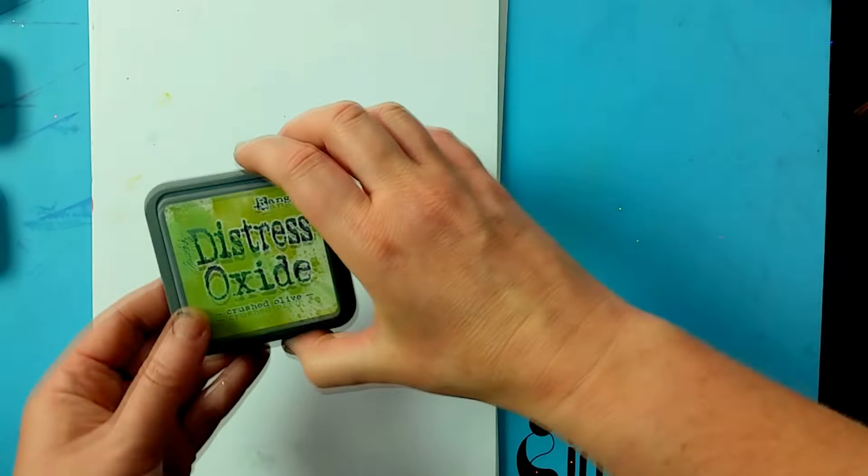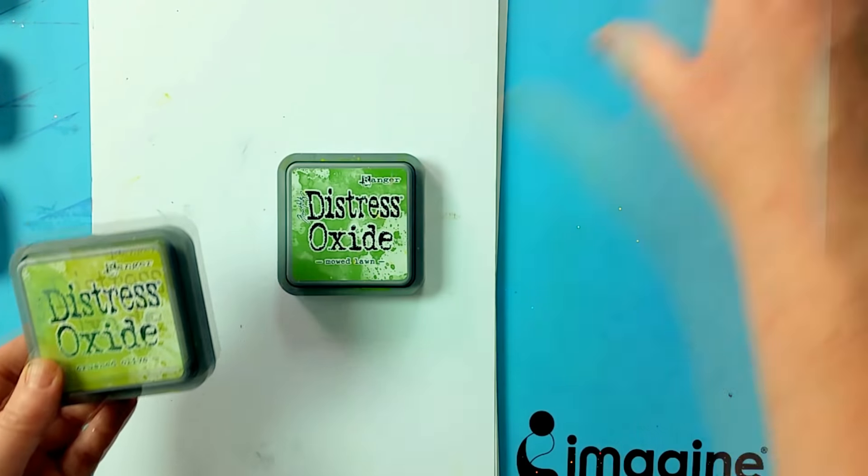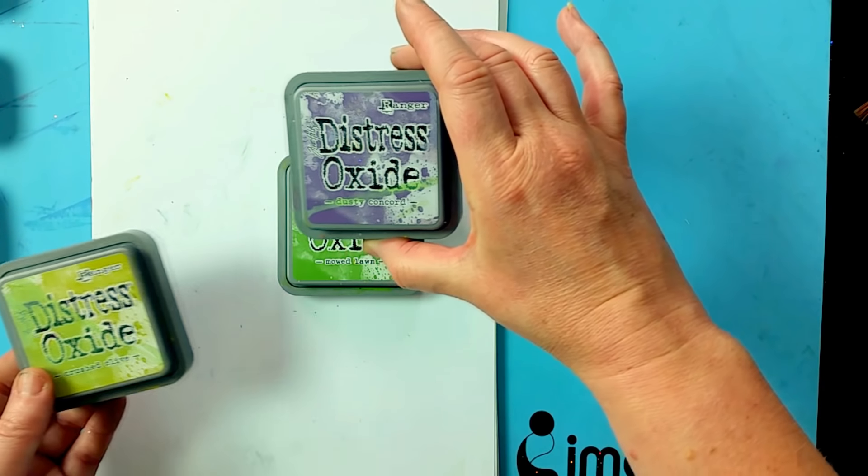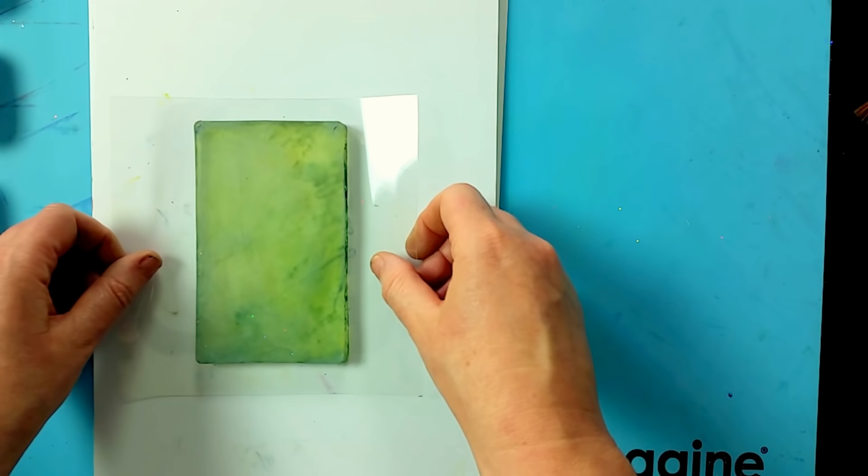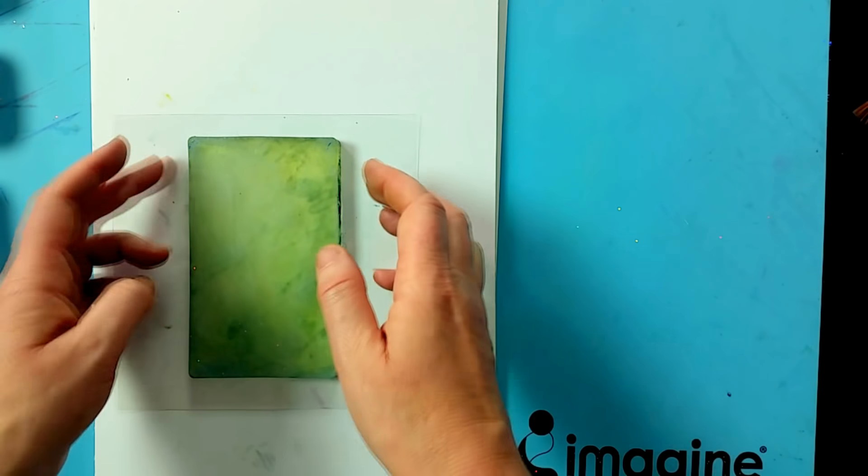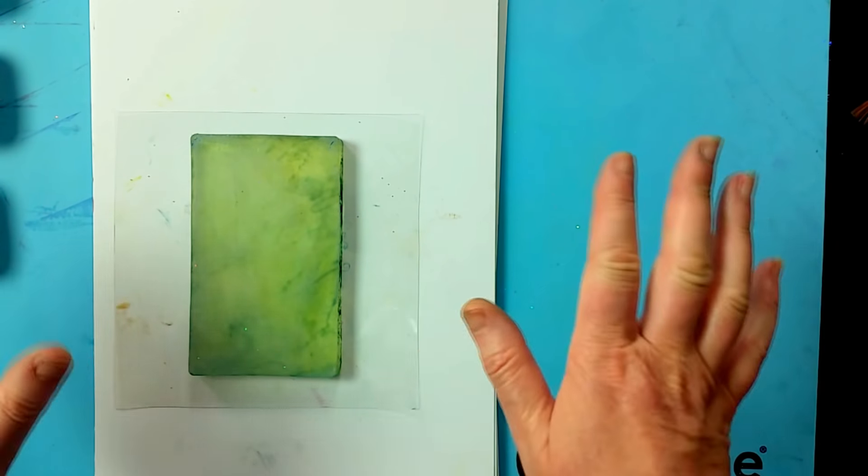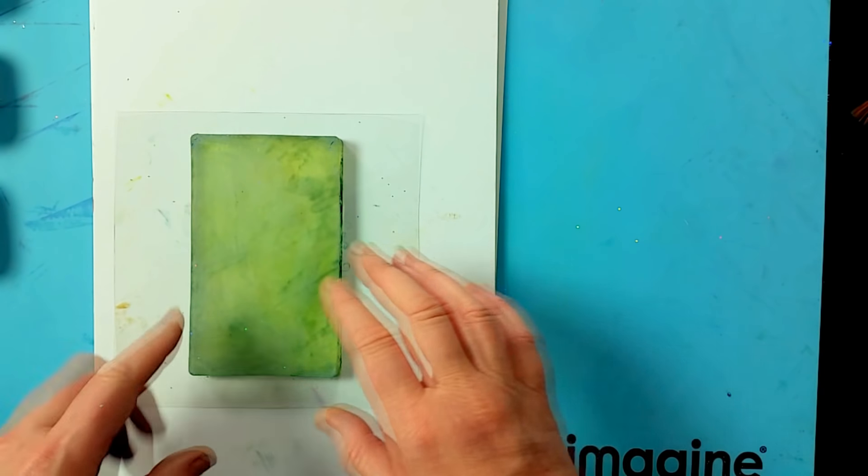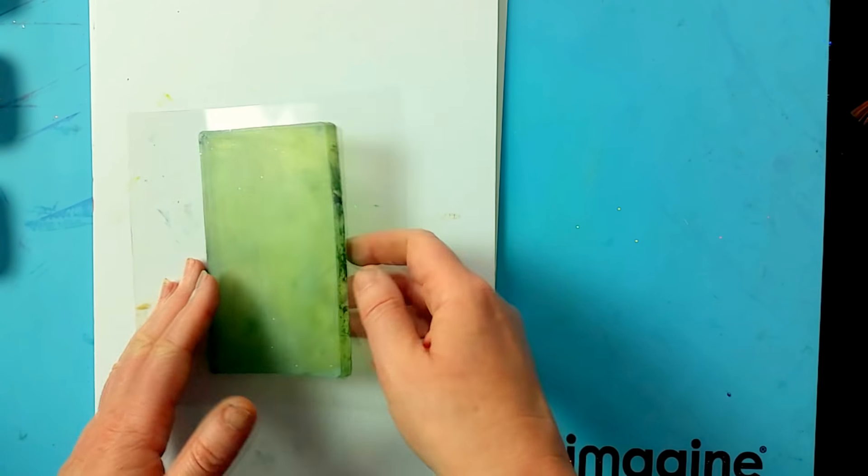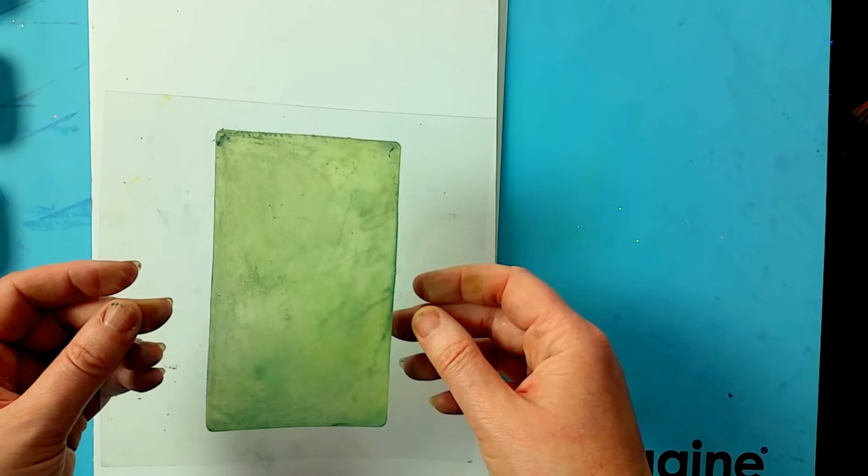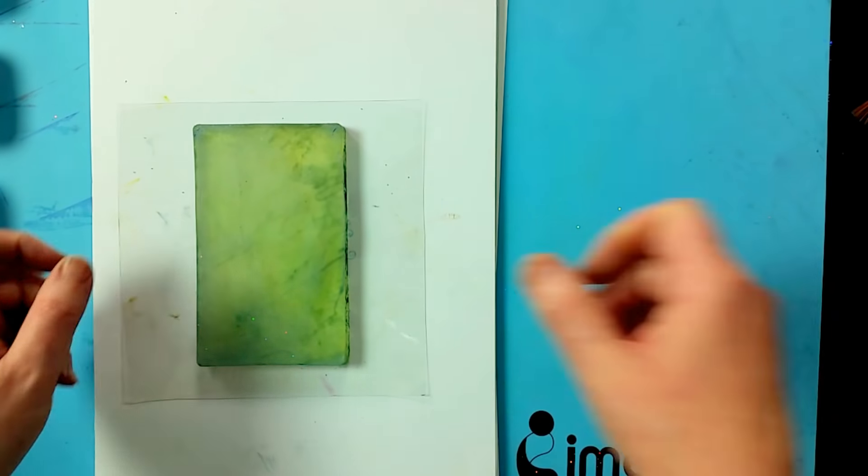We're going to be using the mowed lawn, the crushed olive, and I might even use some of the dusty concord as well. We're going to be using the jelly plate. Excuse the state of my jelly plate - as you can see it's well worn, but there's still absolutely nothing wrong with it. Don't think that just because your ink is stained on it that there's going to be a problem with the jelly plate.